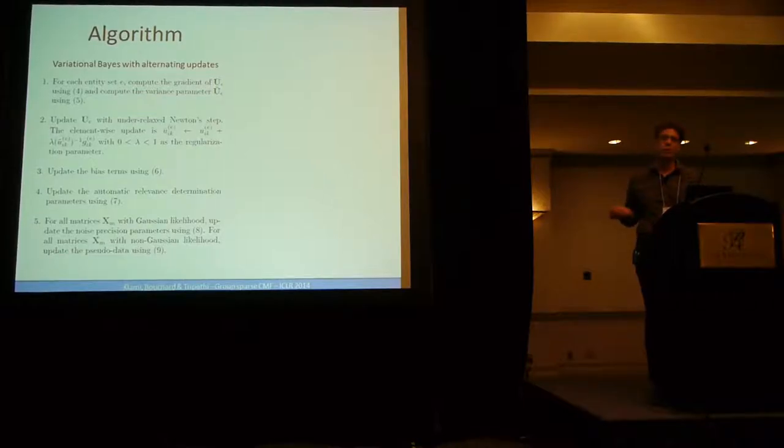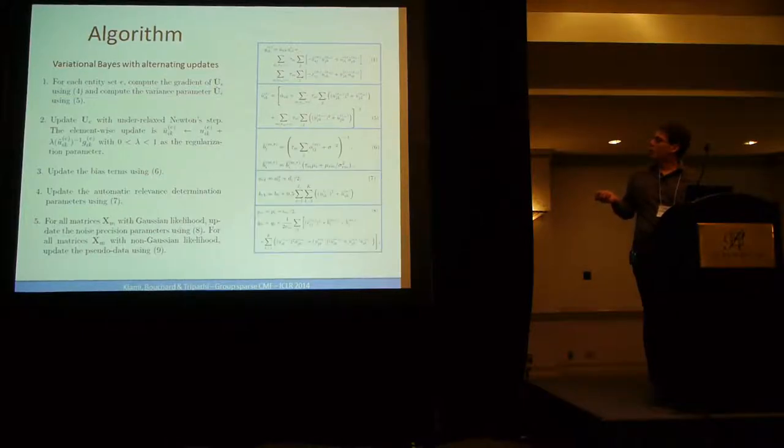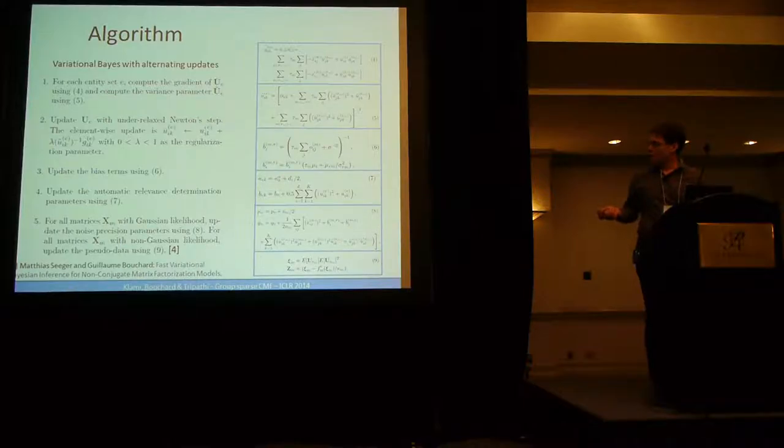The algorithm, I will go very quickly over it. We're not using SGD. We use alternating optimization, which is nearly closed form. Only the first part, the mean update, we did a small trick to accelerate the inversion of the K by K matrix. But otherwise, it's very similar to a MAP type of inference. You only have, in addition, some variance estimation. What's important in what we have done is that we properly treated the case of non-Gaussian data, meaning binary and Poisson data.